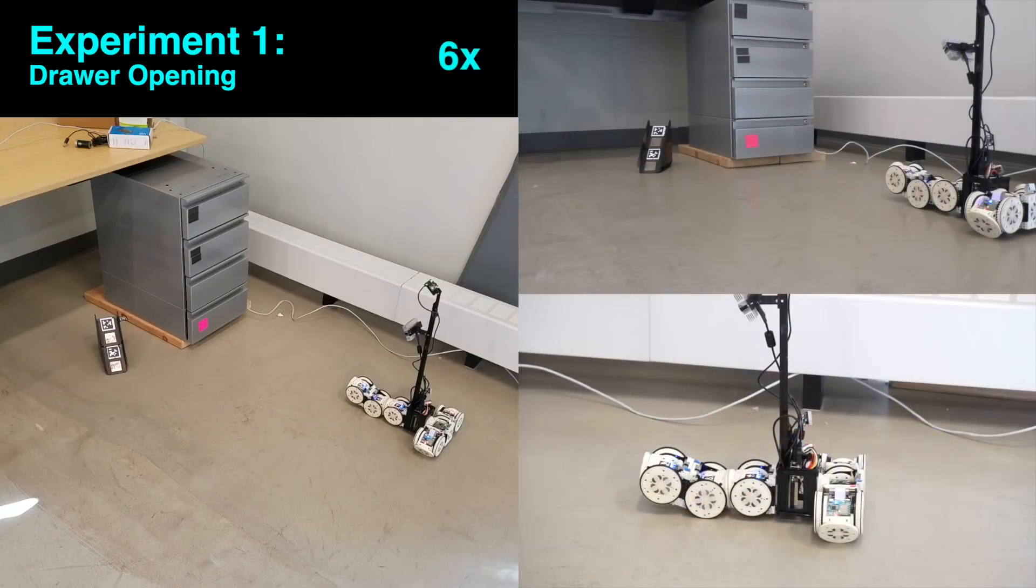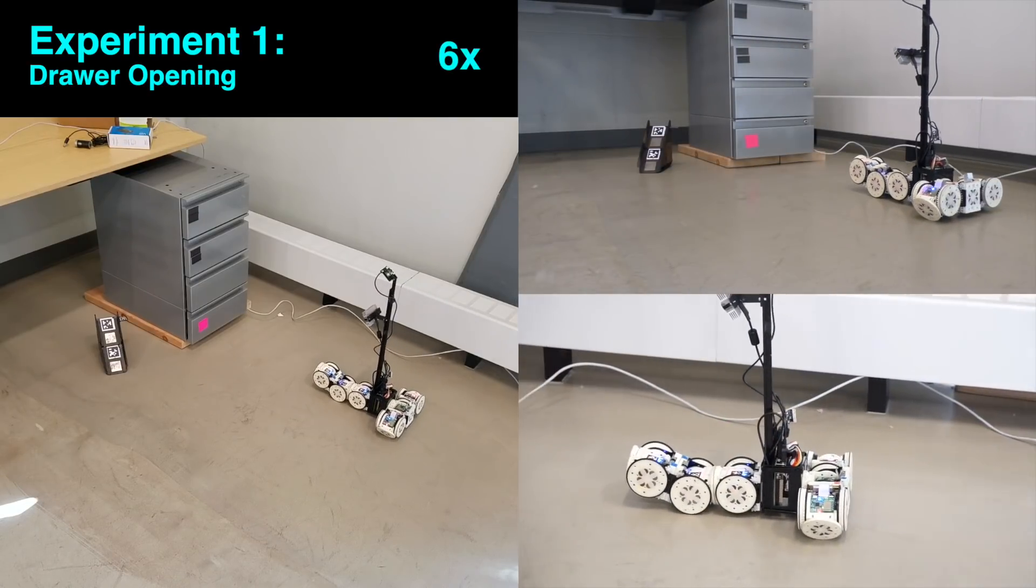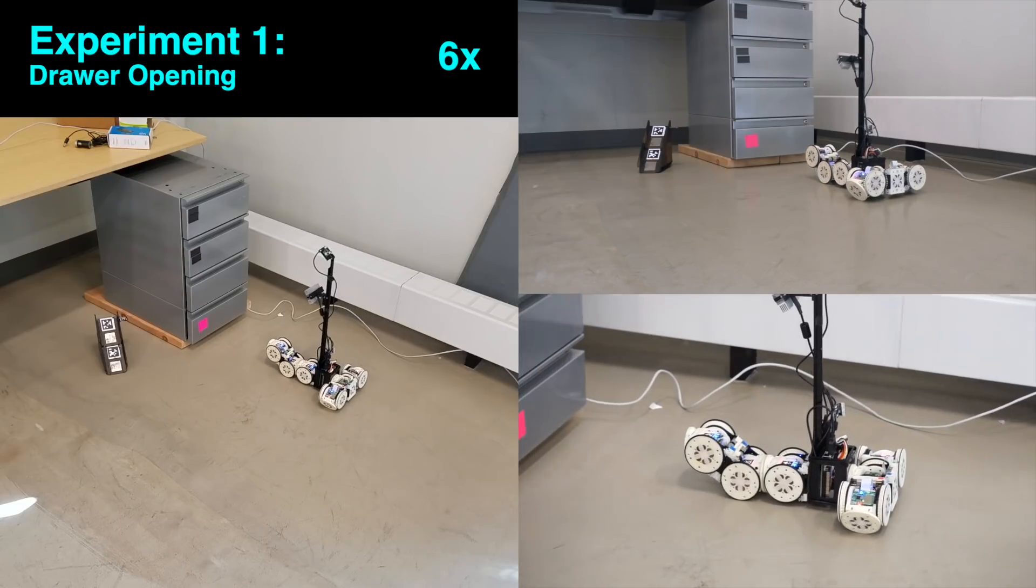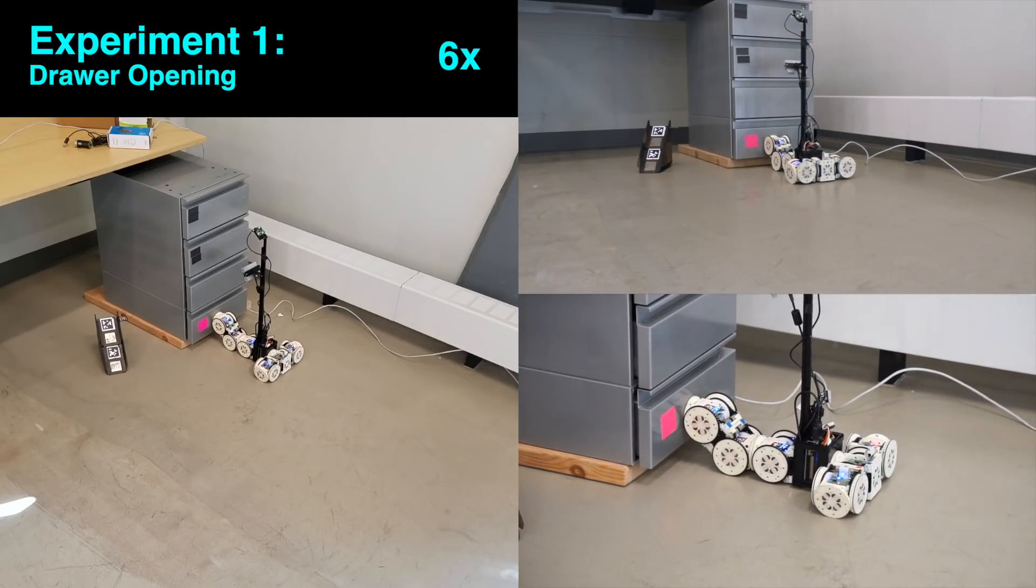The robot quickly locates the pink label that identifies the set of drawers. It moves into place, latches to the bottom drawer with its magnets, and pulls it open.